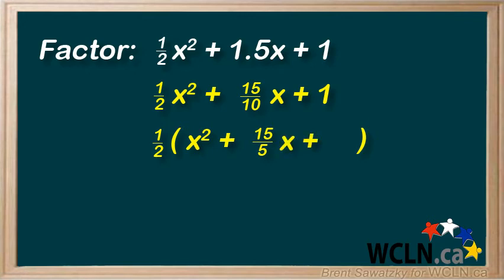And for the last term, the constant, one half times what gives us 1? Well, thinking if we had 2 over 1, then the top and bottom would both be 2. And 2 over 2 is just 1. So, a 2 would be perfect for here.